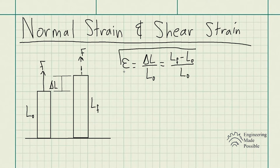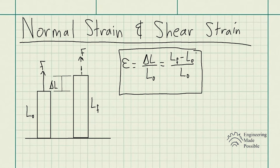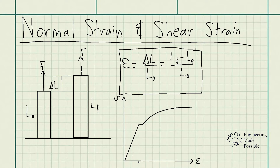Normal stress and strain actually have a relationship. Going back to material science class, we saw the stress versus strain diagram. Stress is on the y-axis while strain is on the x-axis. We get this kind of diagram when an object deforms, and we see the initial segment has a linear relationship of stress versus strain.